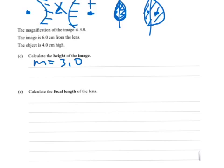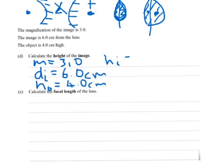So we've got the magnification, 3.0. The distance of the image from the lens is 6.0 cm. And the object has a height, so HO of object equals 4.0 cm. We need the height of the image, so HI equals question mark.